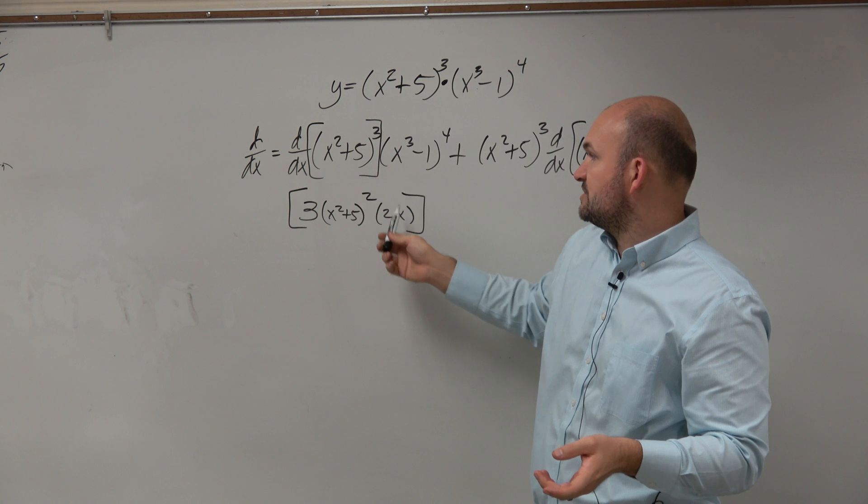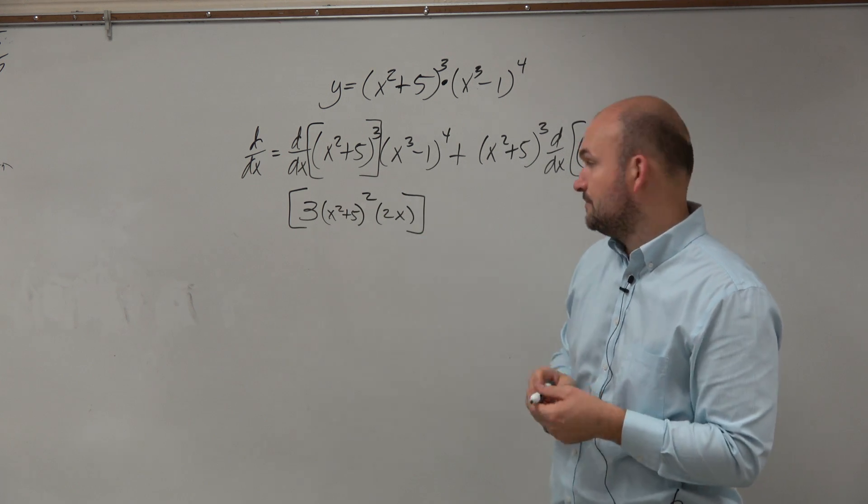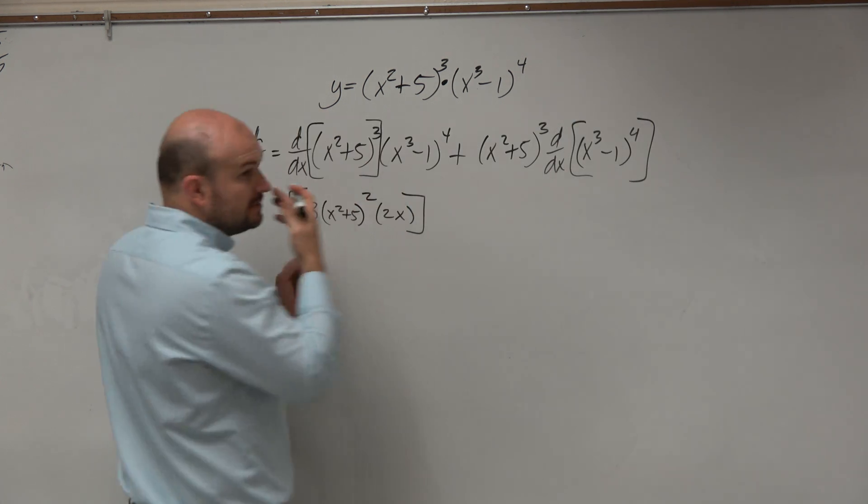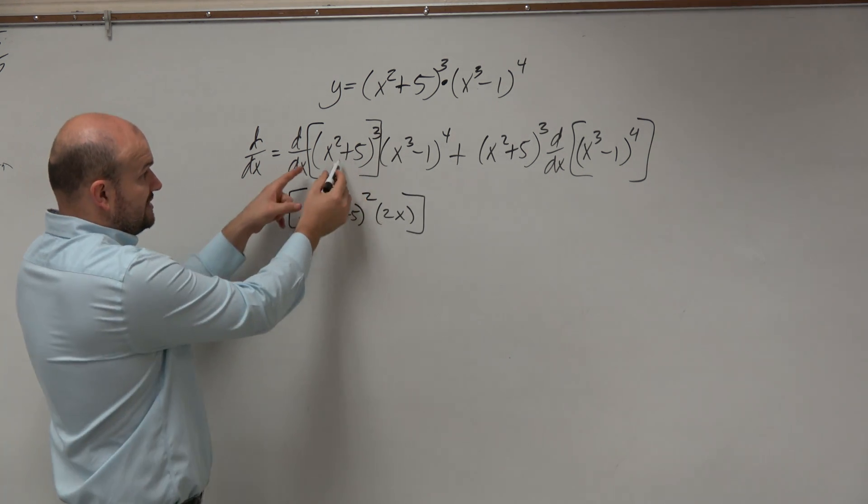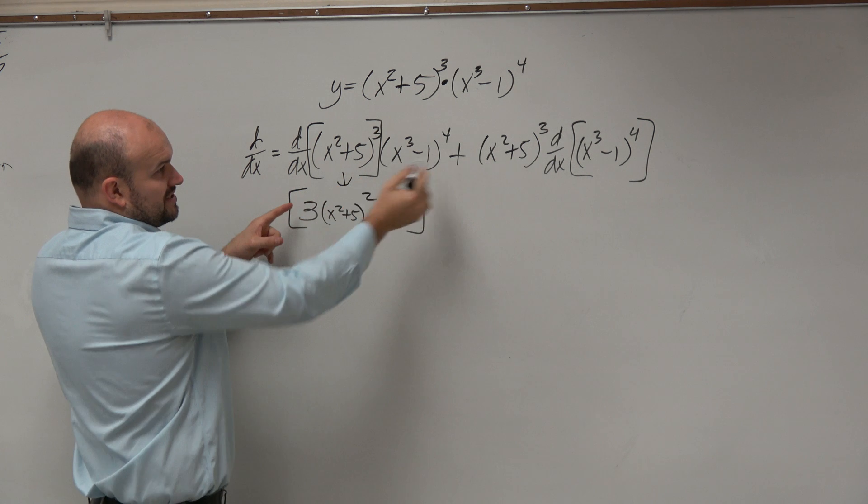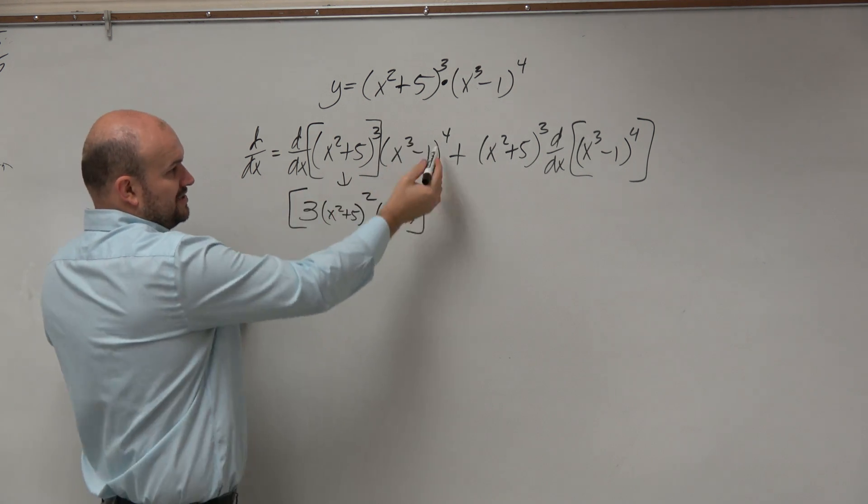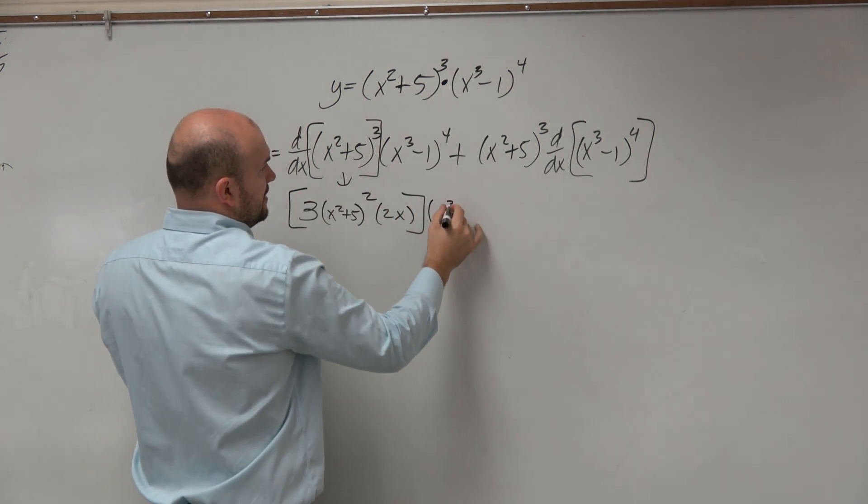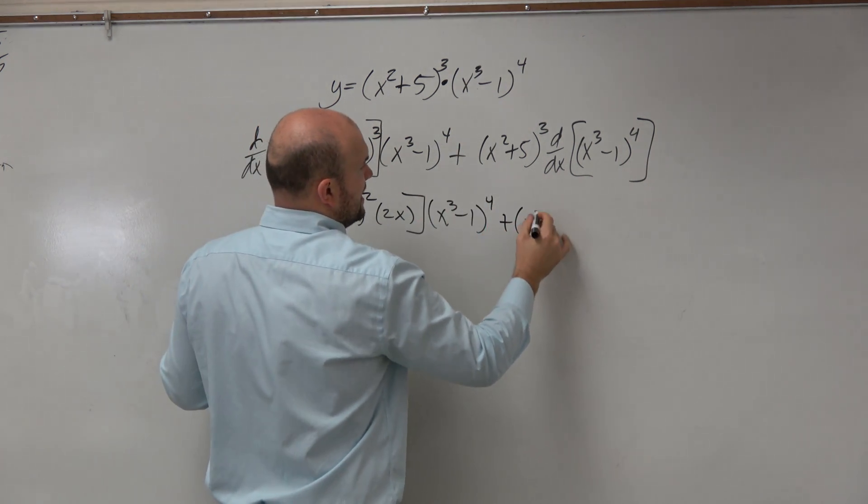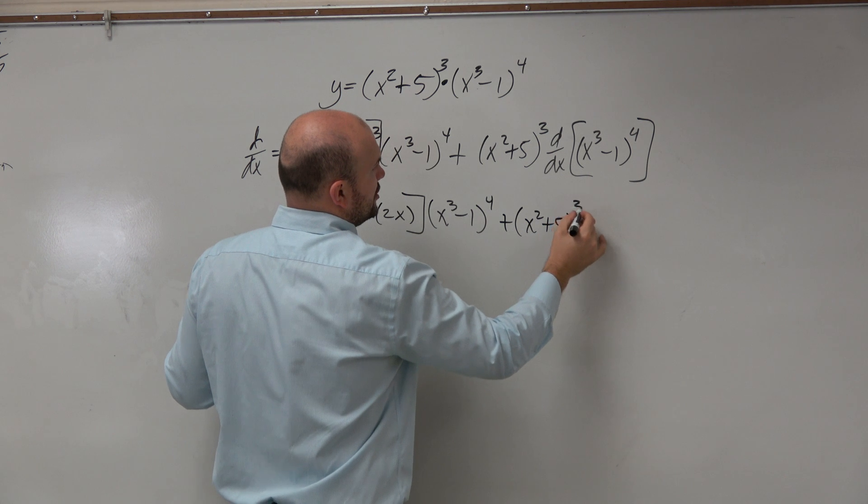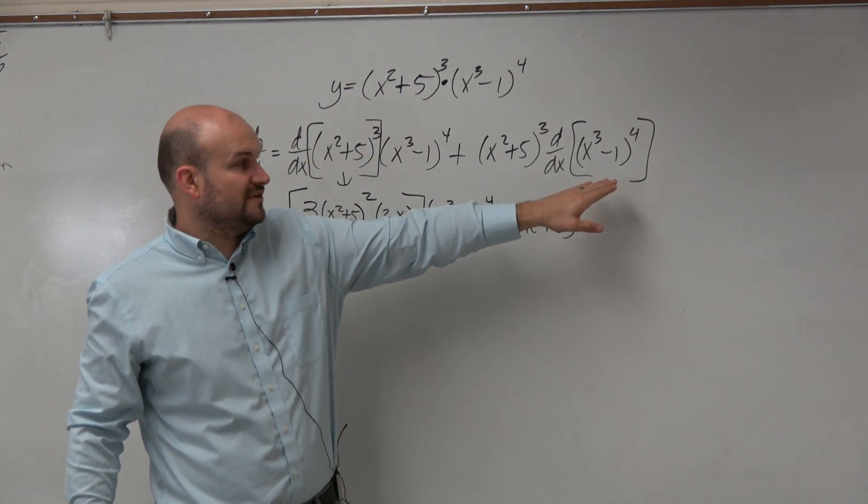So the derivative of x squared plus 5 is just 2x, right? Okay. Now, yes? Is this all still in the power rule? Yeah, all I did was here to here. I still have all this to go. So now I do this, which is just the same, x cubed minus 1 to the 4th, plus x squared plus 5 cubed. And now I need to take the derivative here, which is again...